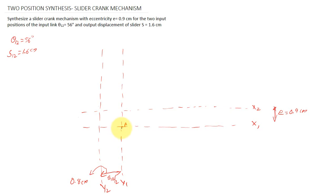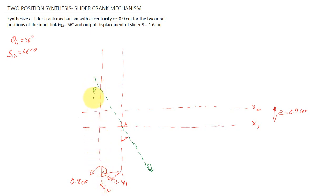Next, draw a line at an angle of theta 1-2 divided by 2 from the vertical line y1. I am drawing the line Q at that angle — which is 28 degrees. This line intersects line y2 at a point, and that point is called P.